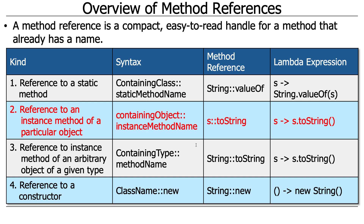Another type of method reference is a reference to an instance method of a particular object — no longer a static method, but something where you need an object in order to call it. In that case, you have the containing object, colon colon, instance method name. So if you had a string s, you could use s::toString as a method reference for that particular string instance. The corresponding lambda expression would be s -> s.toString.